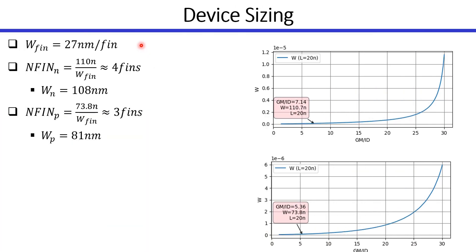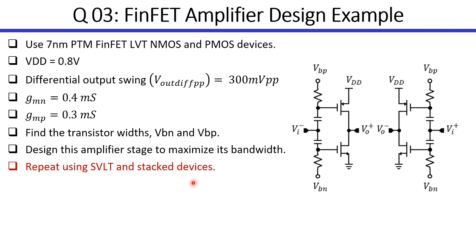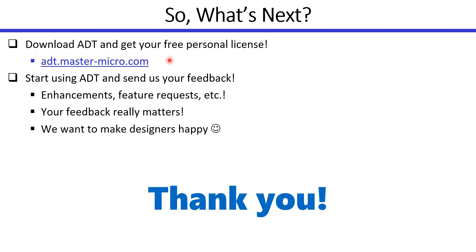To account for the quantized nature of FinFET devices, I calculate a discrete number of fins for each device. The width per fin for our technology is 27 nm per fin. The NMOS device is approximated to 4 fins and the PMOS to 3 fins with their respective updated widths. As an exercise, you should repeat the whole design procedure using super low-VT and stacked devices. Please visit our website, get your free ADT personal license, start using ADT, and send us your feedback. Thank you and see you in the next tutorial.